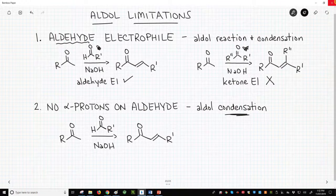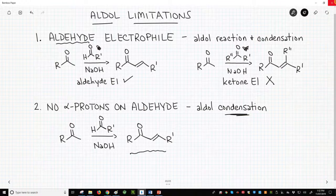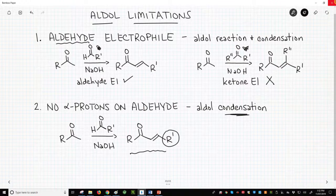Wow, this is a serious limitation. So when we draw this aldol condensation product – our alpha-beta unsaturated ketone – we innocently show this R' group as if R' can be anything that we want.